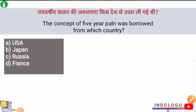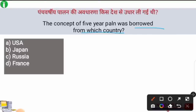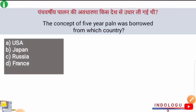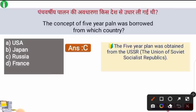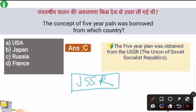Next question: The concept of the Five Year Plan was borrowed from which country? The right answer is option C — Russia. The Five Year Plan concept was obtained from the USSR, which stands for Union of Soviet Socialist Republics, of which Russia was the major part.